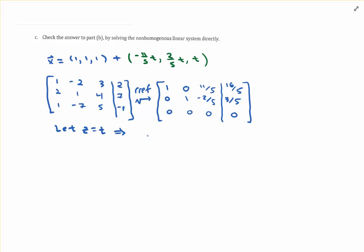In a similar vein as the homogeneous linear system, we'll rewrite x, y, and z in terms of the parameter. The parametric equation for x, based on row 1, is 16 fifths minus 11 fifths t. The parametric equation for y is 3 fifths plus 2 fifths t, and z equals t.